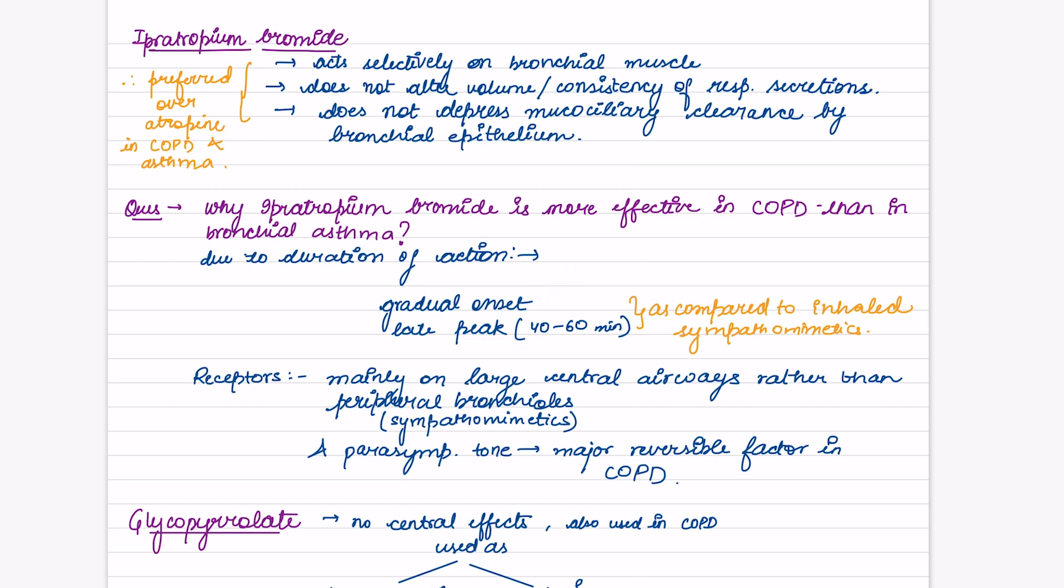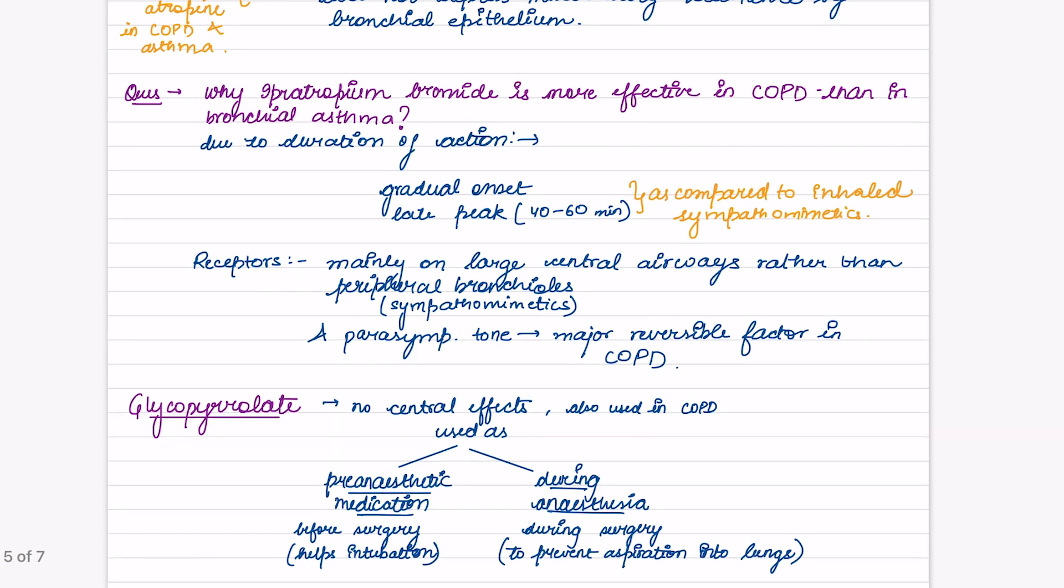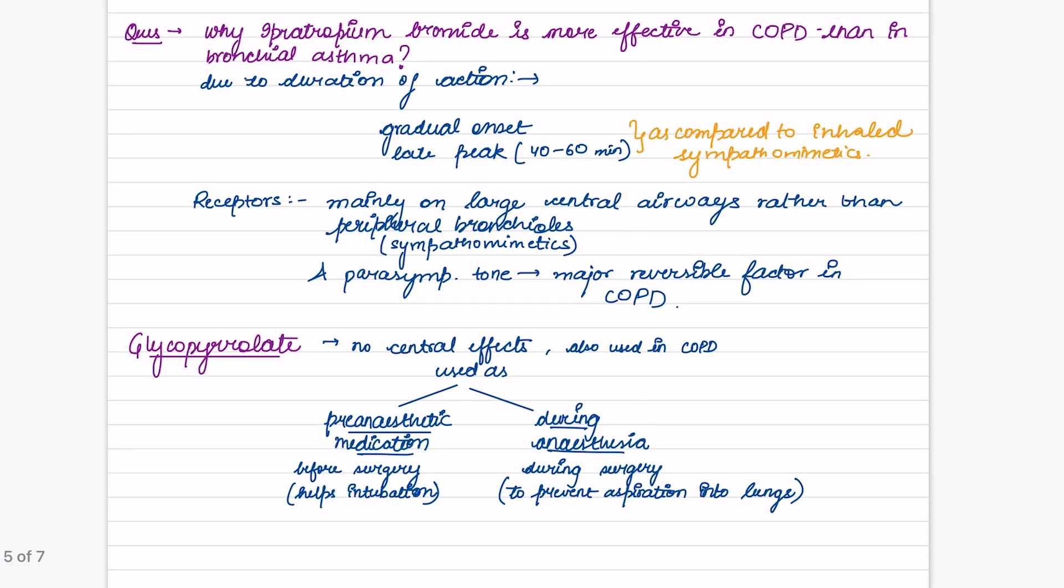Why is ipratropium bromide more effective in COPD than in bronchial asthma? Because of its duration of action. Asthma would not be effective because we need immediate relief in asthma, but it has a late peak. Therefore it is more effective in COPD compared to asthma. Its receptors are mainly on large central airways rather than peripheral bronchioles. Sympathomimetics dilate peripheral bronchioles, and parasympathetic tone is a major reversible factor in COPD.